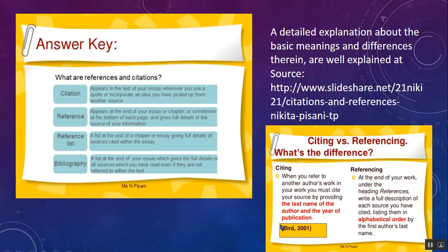This citation can be done either manually or automatically. If you are using hundreds of articles for preparation of a literature review, it becomes a very cumbersome job to identify each one and provide citations. At the end of the document one also needs to provide a full list of references with complete descriptions of each cited source, arranged in alphabetical order. This consumes a lot of time and energy.